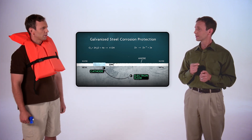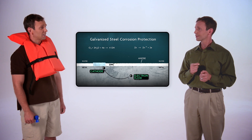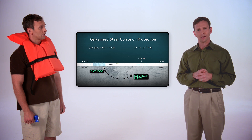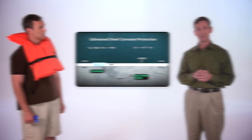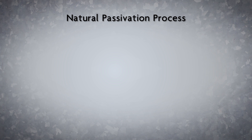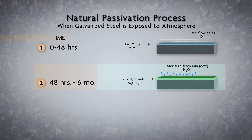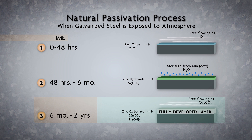Did you just say passivated? Yes, I did. As a host, it's my job to interject new terms to educate the viewer. Given sufficient contact time with the atmosphere, the outer layer of newly galvanized steel will form a stable, non-porous, protective zinc hydroxide zinc carbonate layer. These reactions are known as passivation.